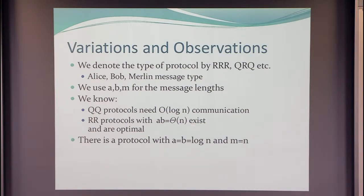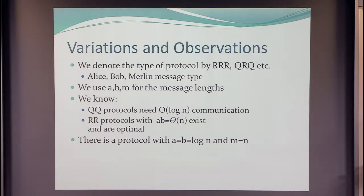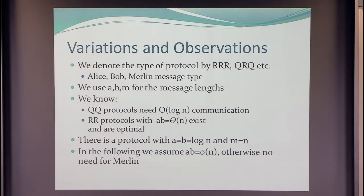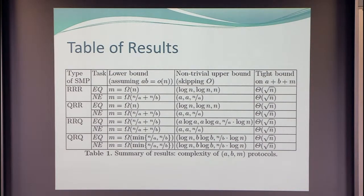There's another, I'd call it trivial, protocol where Merlin just sends X. Take the equality problem — Merlin sends X, and Alice and Bob just send a fingerprint of X and Y. If these fingerprints coincide with the fingerprint of that string, you can decide that the strings Alice and Bob have are also equal. In the following, I'll give you a table of results. We assume that the product of message lengths is too short for Alice and Bob to solve the problems by themselves; otherwise, we don't need to consider the prover Merlin.